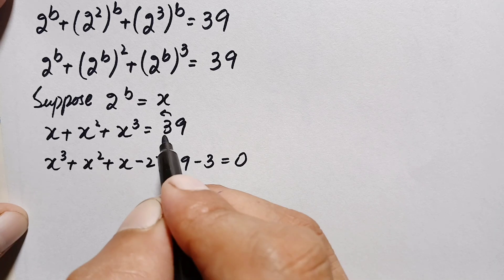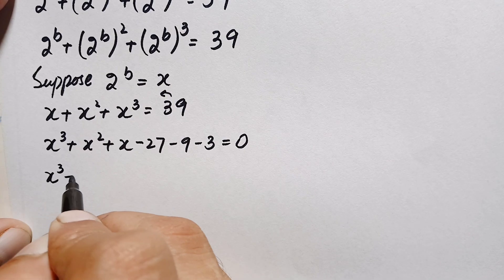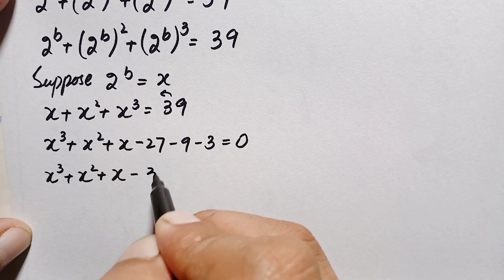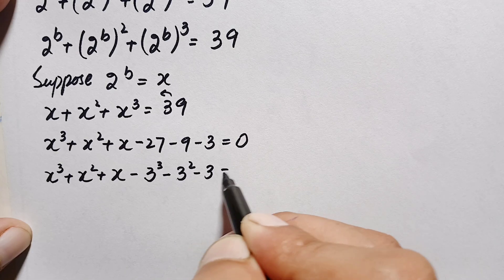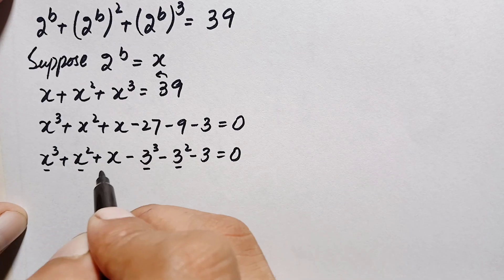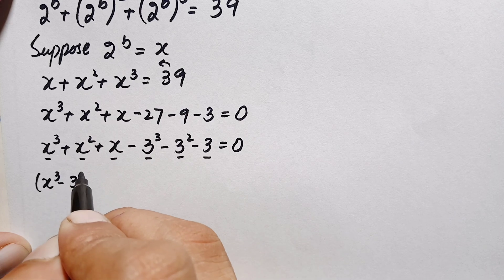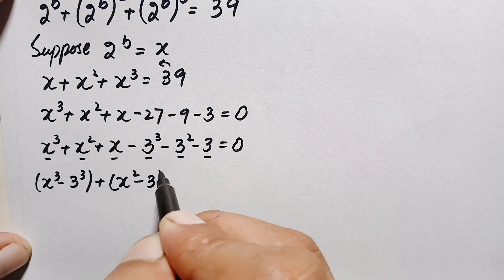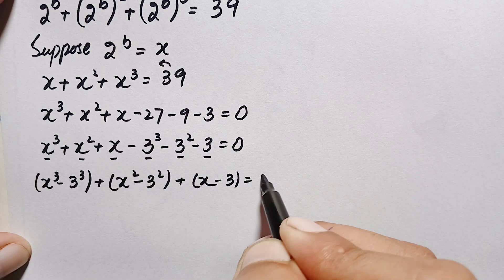We rewrite the equation grouping each variable term with its corresponding constant: x cubed minus 27 (which is 3 cubed), plus x squared minus 9 (which is 3 squared), plus x minus 3 equals 0.